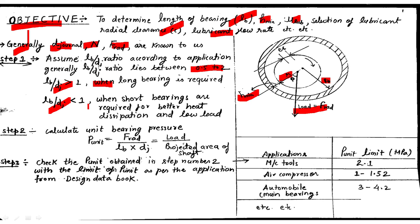Step number two: calculate the unit bearing pressure as the ratio of radial load to the projected area of the shaft. The unit bearing pressure is calculated using the formula shown on the screen. Once you get the value of unit bearing pressure, check it against the values specified for various applications in the design data book. A sample table on the right side shows unit bearing pressure values for various applications.